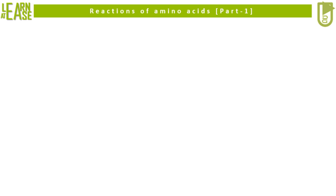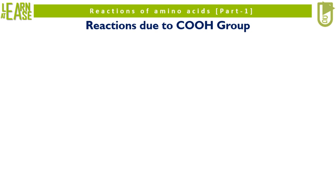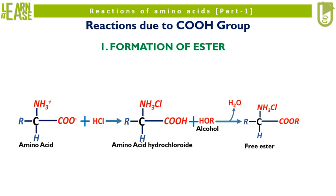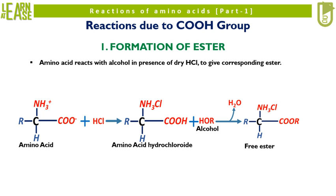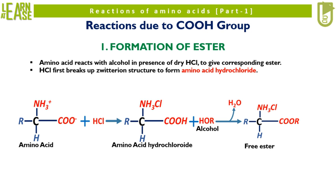I will now explain reactions of amino acids purely due to involvement of carboxylic group. The first reaction is formation of ester. In the reaction, amino acid reacts with alcohol in presence of dry HCl to give the corresponding ester. HCl first breaks up the zwitterion structure to form amino acid hydrochloride, which then reacts with alcohol.